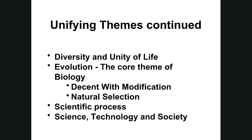Descent with modification means change over a very long period of time, like millennia. For example, we now have some antibiotic-resistant bacteria — but they're still bacteria; they haven't changed into something else. Things can change without transforming from, say, an earthworm into a person.